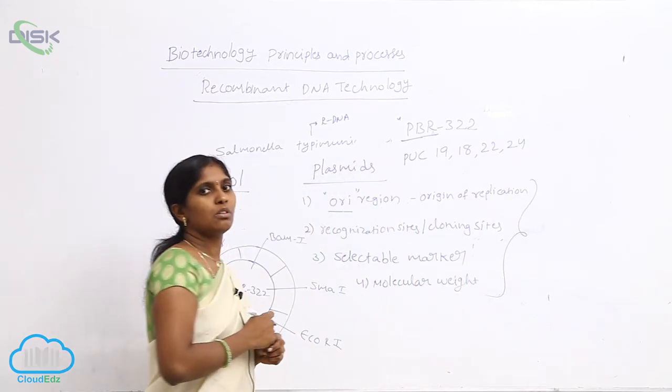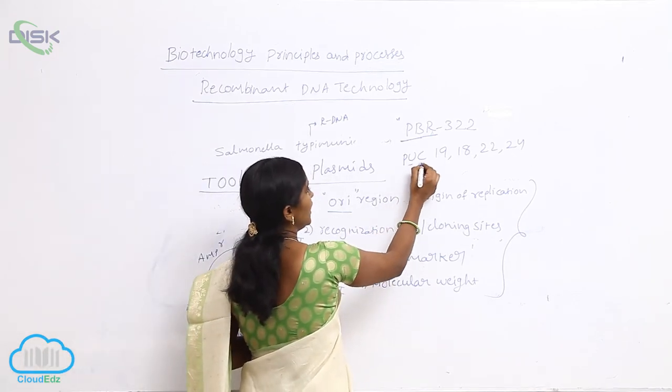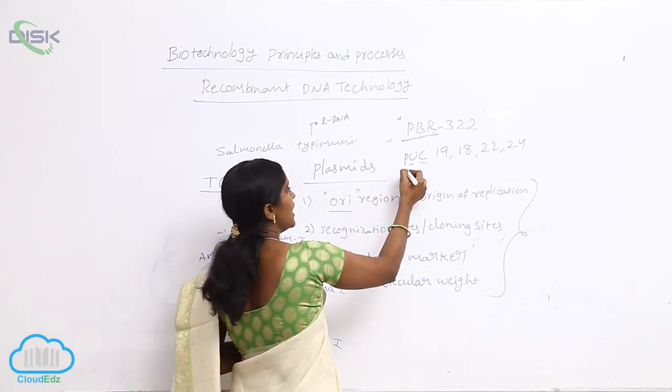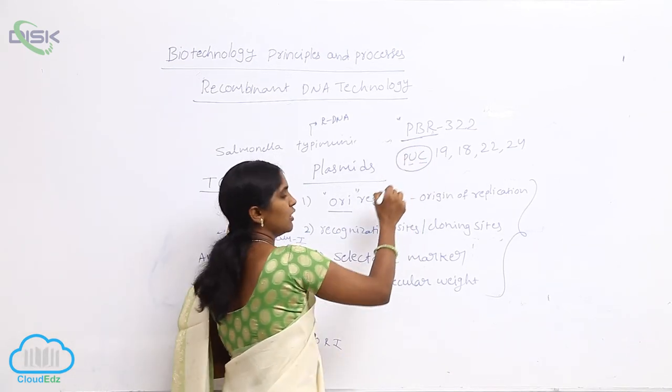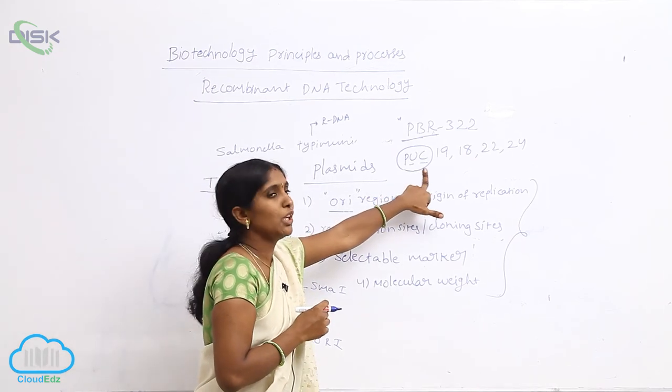PUC indicates University of California. The plasmid was developed at University of California, so the name given is PUC.